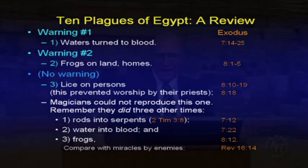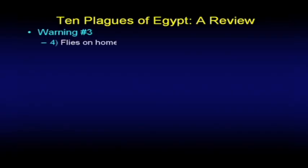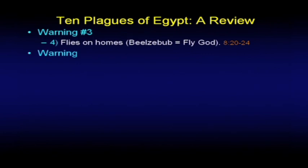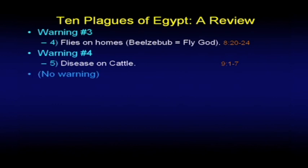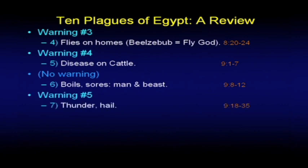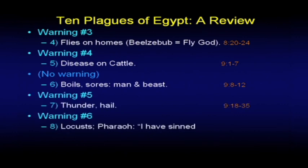We should note that enemies can do miracles — that's an important lesson that is echoed in Revelation 16 and elsewhere. Then came warning number three — the flies in the homes, Baal being the fly god. Warning number four — disease on the cattle. The sixth plague — boils and sores on man and beast — had no warning. Warning number five — thunder and hail. Warning number six — the locusts, in which Pharaoh himself admits 'I have sinned.'